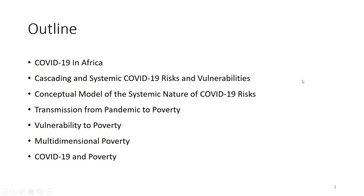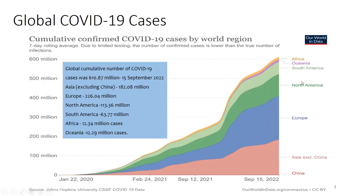To look at the figures for Africa — a snapshot first. For global COVID-19 cases, we all know it started around March 2020 when it was declared a pandemic, and since then the number of cases started to rise across the world across different continents. Many countries have been hit by the pandemic in terms of cases and deaths. The global cumulative number of COVID-19 cases stood at 610 million as at 15 September 2022.